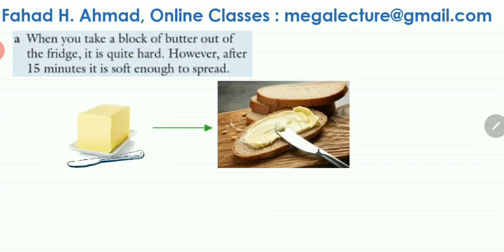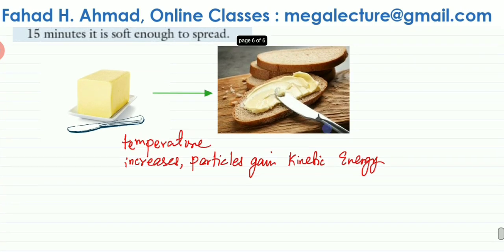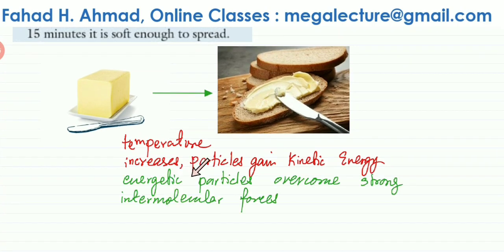When you take butter out of the fridge it is a very rigid, hard solid. After some time keeping it out, you can easily spread it on a piece of bread. As the butter stays outside, the temperature increases, the particles gain more kinetic energy, and they overcome the strong intermolecular forces keeping them in the rigid solid structure.